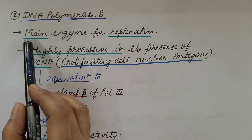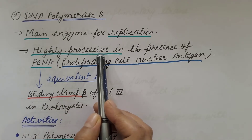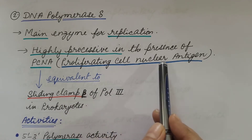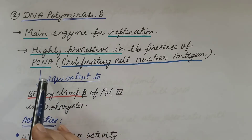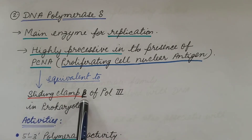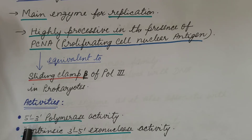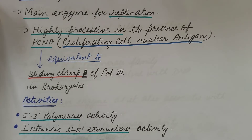The second is DNA polymerase delta. It is the main enzyme for replication — the major replicative enzyme. It is highly processive in the presence of PCNA, proliferating cell nuclear antigen. It is associated with PCNA, as a result of which it is highly processive. This PCNA is equivalent to the sliding clamp beta of polymerase III in prokaryotes, which we discussed in the previous video. The activities it performs are 5'-3' polymerase activity and intrinsic 3'-5' exonuclease activity, and because of these activities it is the major replicative enzyme.